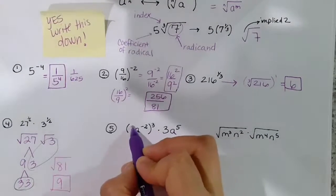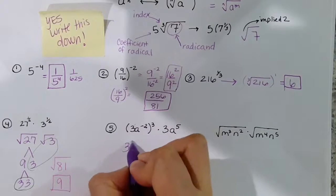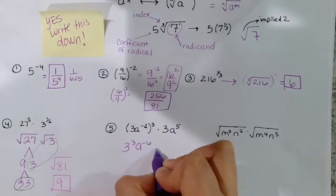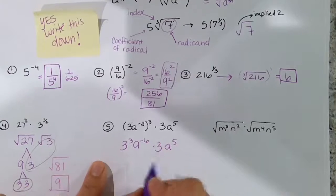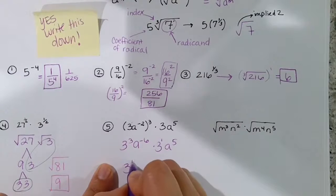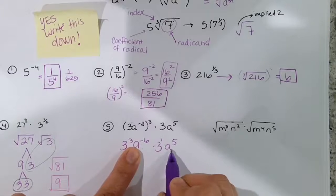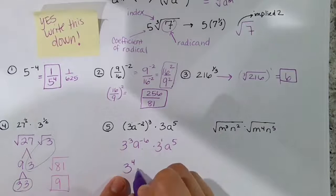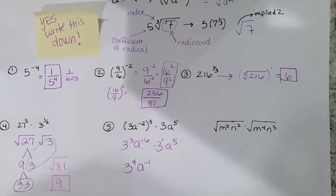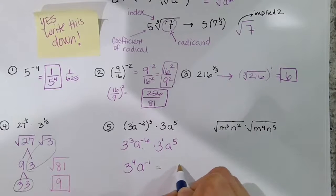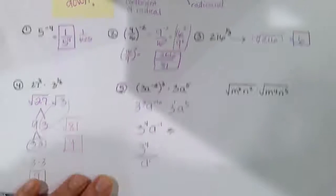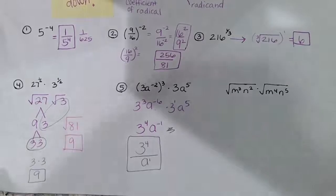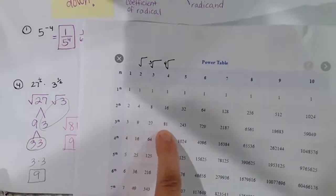For this problem, distribute the exponent 3 to everything inside. You get 3 cubed times 3, which is 3 to the fourth power. For the variable: a to the negative 6 times a to the fifth — add the exponents — gives a to the negative 1. Negative exponents aren't allowed, so move it to the denominator: the answer is 3 to the fourth over a to the positive 1. You can leave it that way or simplify 3 to the fourth as 81.